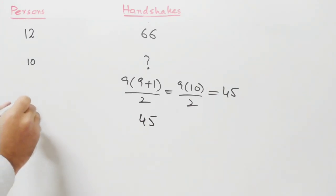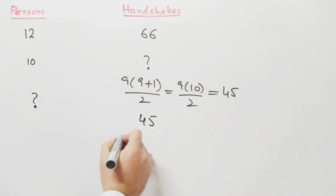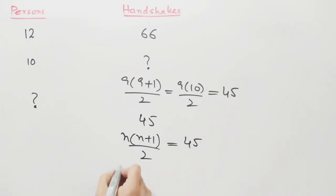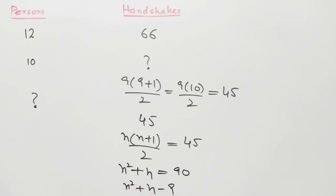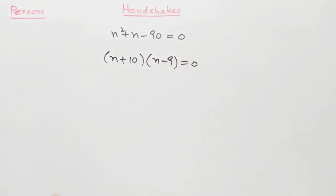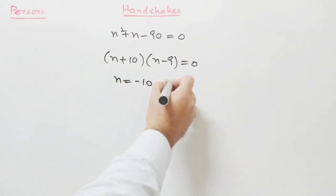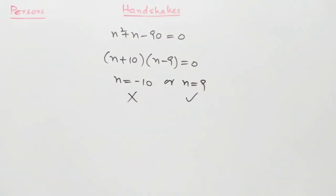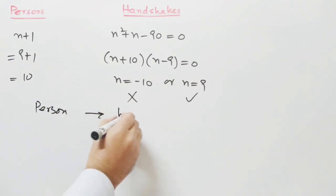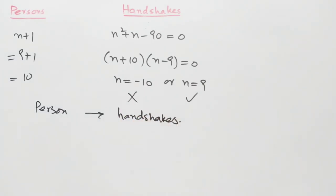Now, if we have forty-five handshakes, we have to find the number of persons. We write n times (n plus one) divided by two is equal to forty-five, so n squared plus n equals ninety, and n squared plus n minus ninety equals zero, which is again a quadratic equation. By factorization: n is equal to minus ten or n is equal to nine. We cancel the negative, take n equal to nine, so the number of persons is n plus one, which is nine plus one equal to ten.